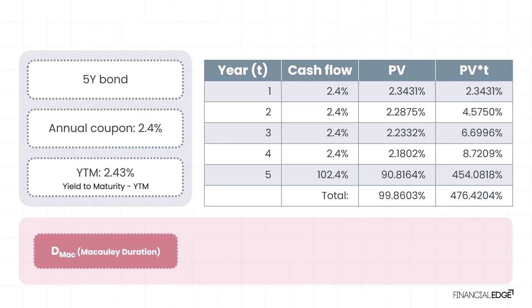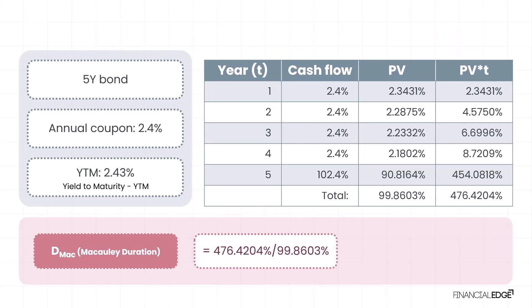Now, to calculate the Macaulay duration, we simply divide the total maturity-weighted PVs of 476.4204 percent by the total PV of the bond's cash flows of 99.8603 percent. The result is a Macaulay duration of 4.7709 years. The Macaulay duration of this bond is 4.7709 years, which indicates that the bondholder will receive the bond's cash flows, on average, in approximately 4.77 years.